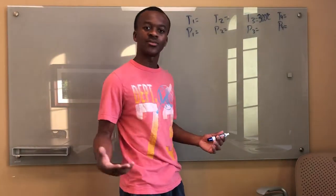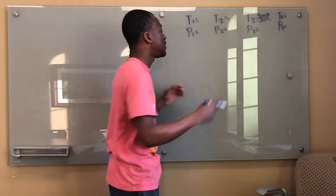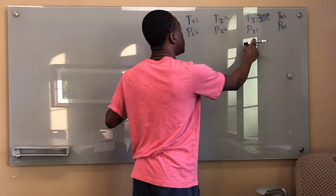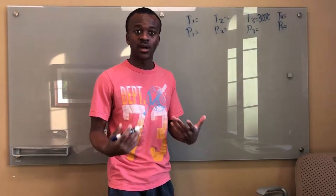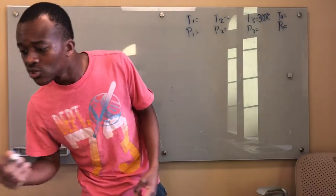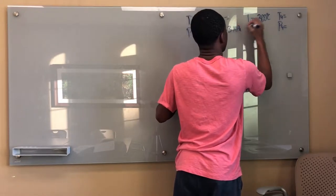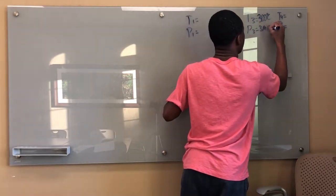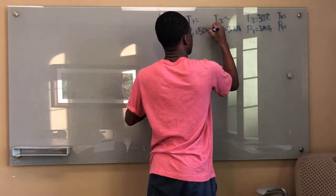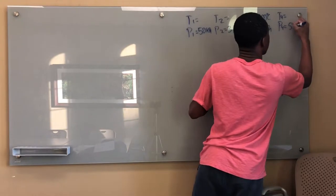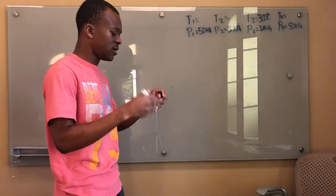The good thing about the Rankine cycle is it only operates between two pressures. So I know that my P2 and P3 are going to be equal, and my P1 and P4 are going to be equal. P1 and P4 are at the low pressure, and P2 and P3 are at the high pressure. So P2 and P3 are 3 megapascals, and P1 and P4 are 50 kilopascals.